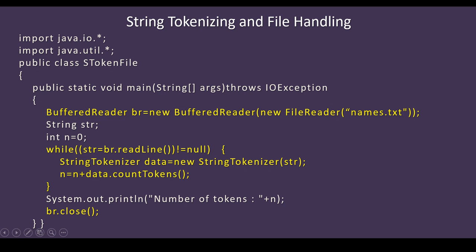Inside the while loop, you create a StringTokenizer: StringTokenizer data = new StringTokenizer(str). The str variable already has the current line's value. The reason you create the StringTokenizer inside the while loop is that you are reading line by line. The while loop reads the first line, checks whether data is available — if available it goes inside, if null it stops. The StringTokenizer is used to read each line, and you keep adding the token count to the variable n.